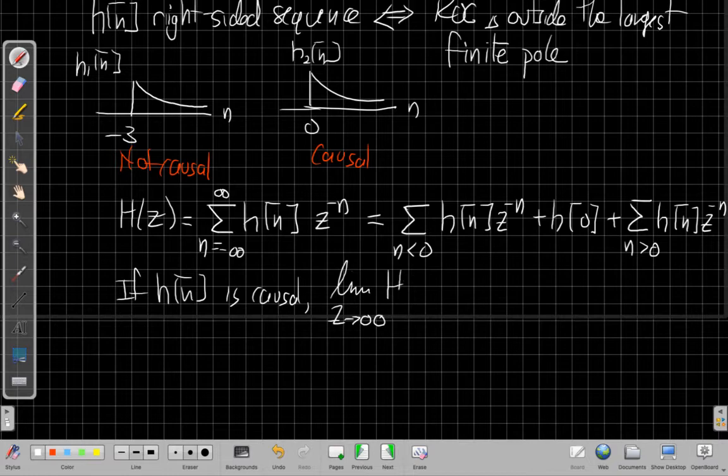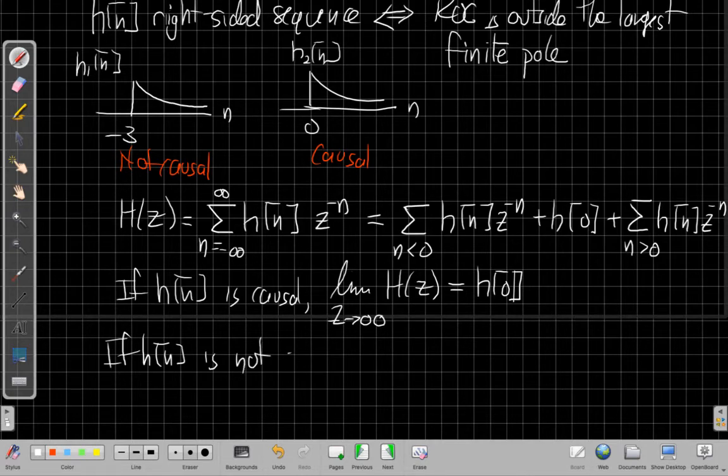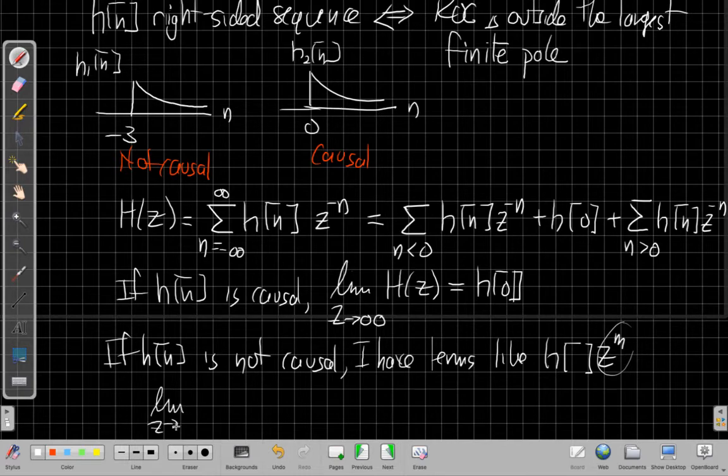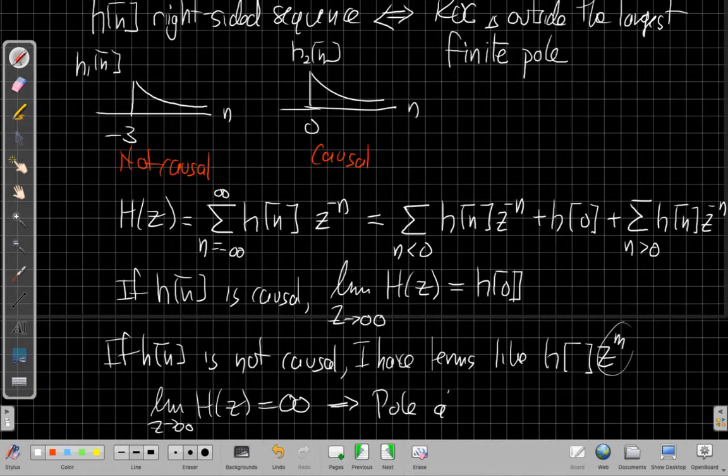On the other hand, if h of n is not causal, then some of the terms in this first sum are not zero. And so if I put in a negative value of n into z to the minus n, I'll have z to some positive power. I have terms that are like some h times z to the m, where this will be positive. If n equals minus m, this will be positive. And the limit of those, as z goes to infinity, will be infinite. As z goes to infinity, z to the m blows up. So if I have a system that's not causal, it must have a pole at z equals infinity.